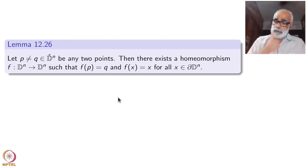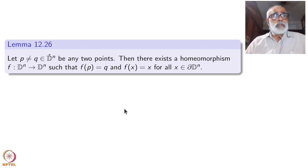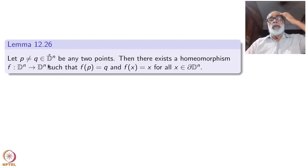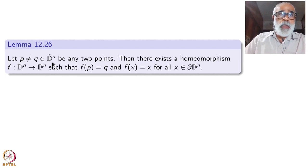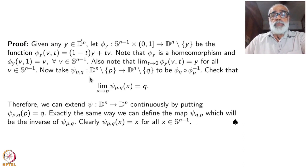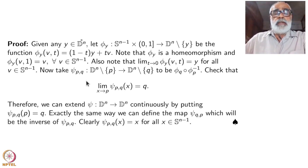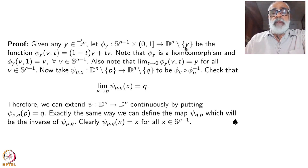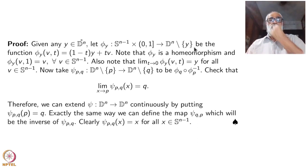You might have heard of such things in complex analysis where you have complex-differentiable functions. Here we are doing it for D^n without the strong structure of complex analysis. The proof is quite straightforward and uses the convexity of D^n. For any interior point y of D^n, let us write a map φ_y from S^(n-1) × (0,1) to D^n minus {y}, defined by φ_y(v, t) = (1−t)y + tv, where v is a unit vector in S^(n-1).